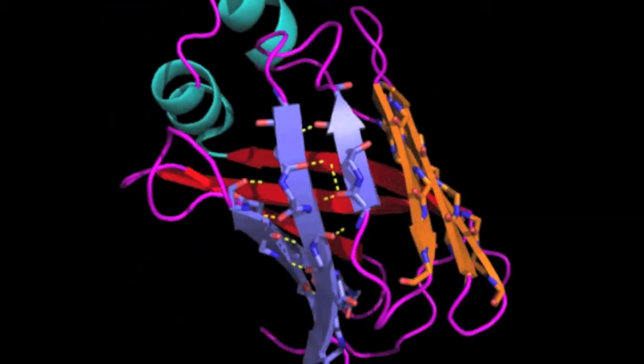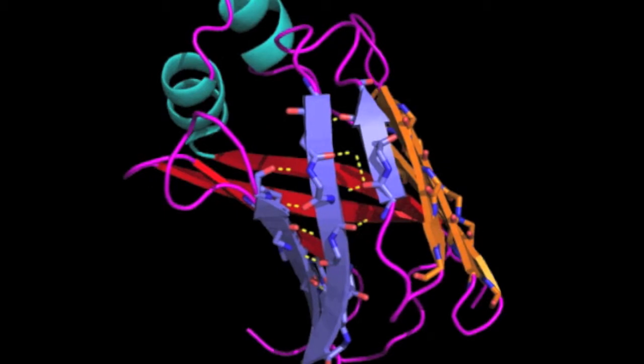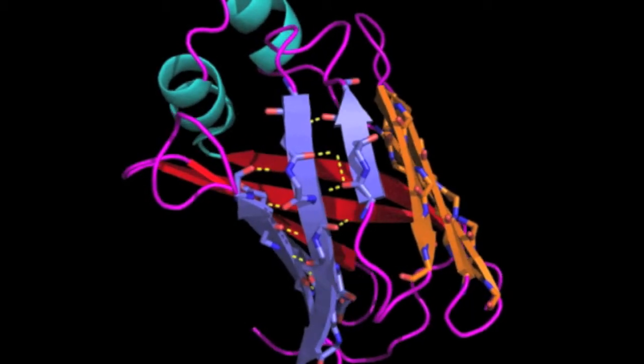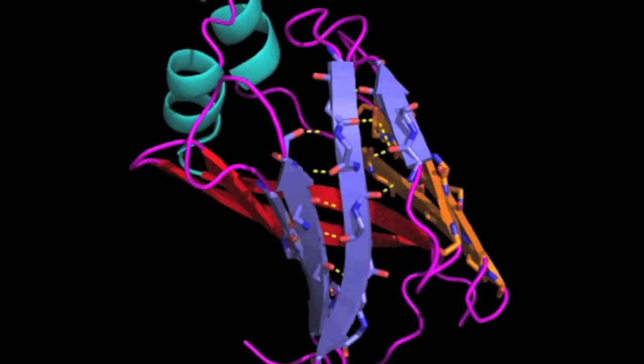That's illustrated with the colors of the strands in the barrel. Different segments of sequence are colored differently to illustrate that linear arrangement.